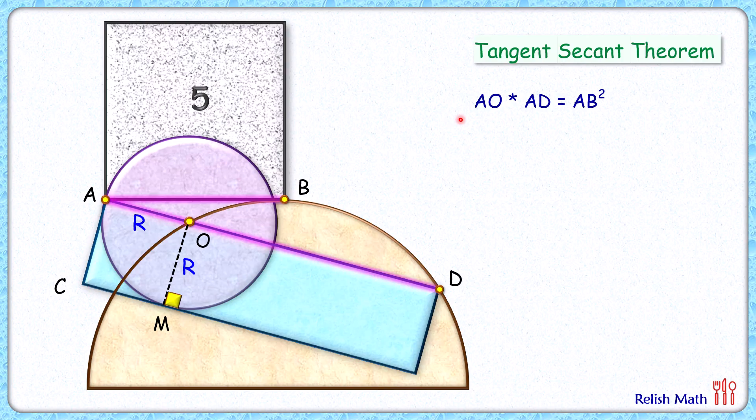So we can say that AO length is same as AC length. So here we get AC times AD is AB square. Now if we look carefully, AC times AD, that's the area of blue rectangle. AB square is the area of this green square.